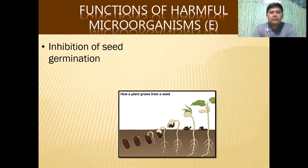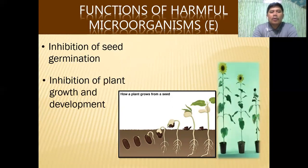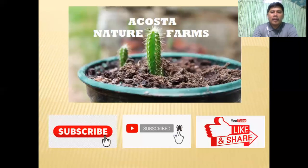If we are not getting 90–95% germination rate, most likely there are harmful microorganisms present in our soil. They also inhibit plant growth and development — whenever we see plants that are not growing or maturing very well, these issues are caused by harmful microorganisms.